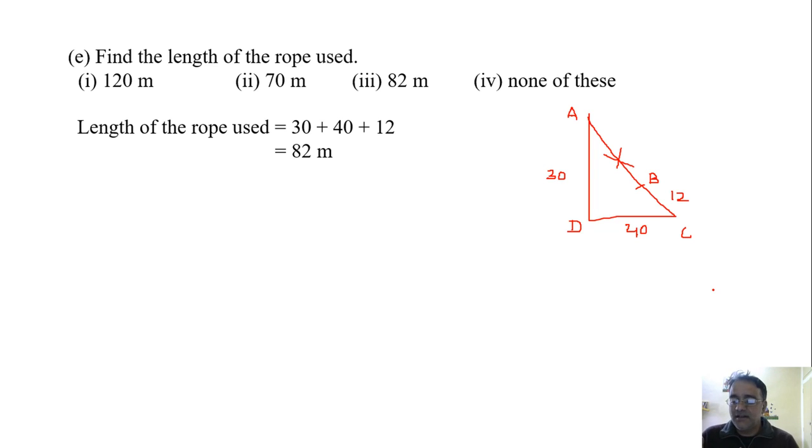So in this case, some students think that I will attempt all five, and whichever four are correct they will check. So that is not the case. The examiner will correct the first four and the fifth one, he will cancel the answer. Okay.